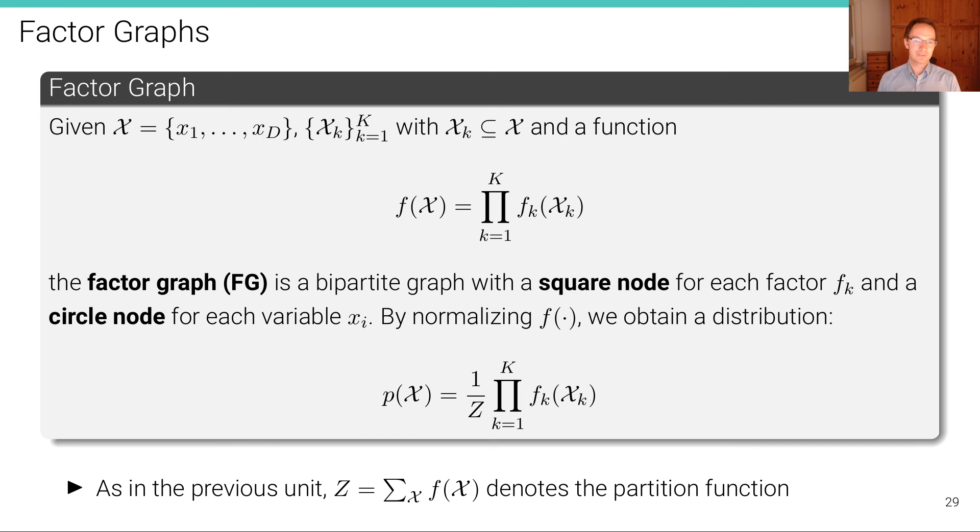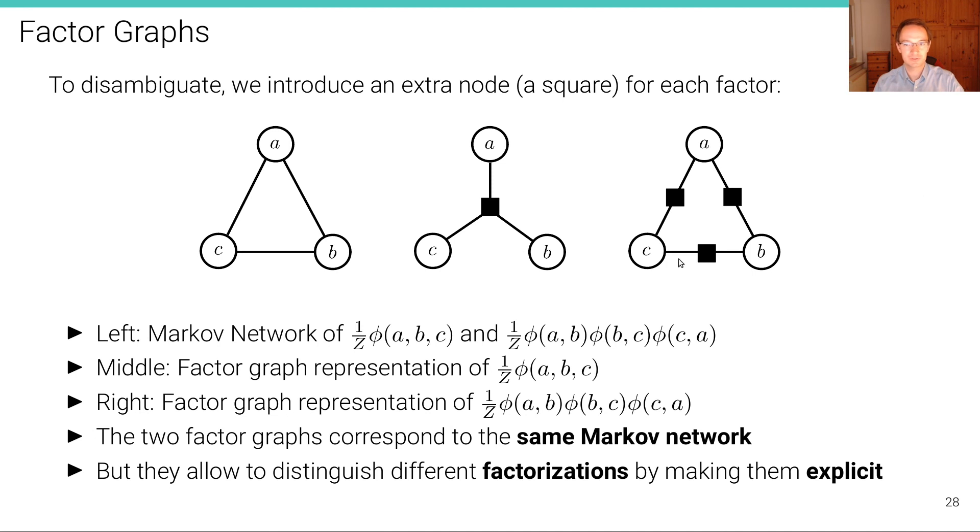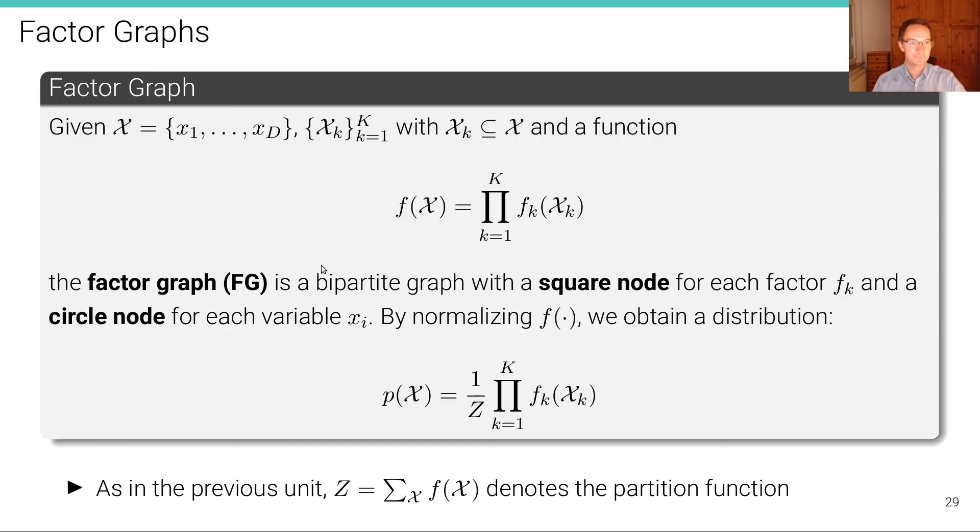Now, very similar to before, we define a factor graph just replacing the potentials phi that we had before now with the factors F. And we're using now this graphical representation, which is more precise, given a set of random variables x1 to xd and sets of subsets of these random variables, which are these cliques or potentials. So each of those is a subset of x.